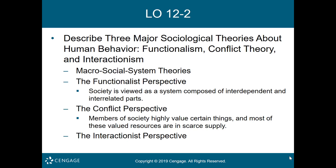Learning Objective Two is to describe the major sociological theories about human behavior, including functionalism, conflict theory, and interactionism. People interact with various-sized systems within their social environment, and these interactions have major impacts on human behavior. Culture, communities, institutions, and organizations are all examples of macro systems. To maximize their effectiveness, social workers must understand and assess the impacts of macro systems on their clients. This chapter addresses three different theories addressing the macro social system, the first being the functionalist perspective.